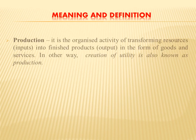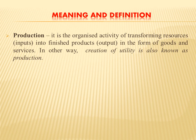Meaning and definition — let's discuss about production. As we know, production is a process by which we transform resources into finished products in the form of goods and services. Creation of utility is also known as production. Production is a process by which we can convert inputs into goods and services. This is the production process.